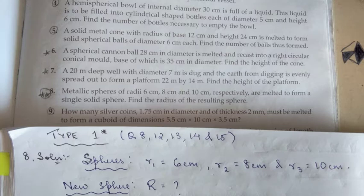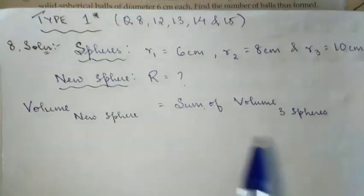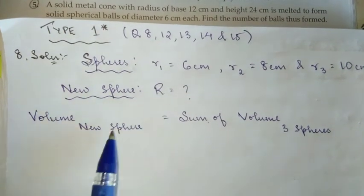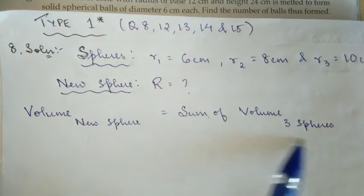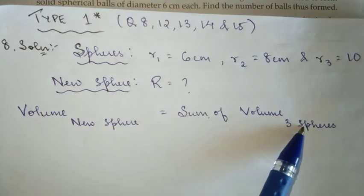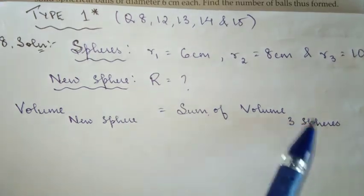So we have three spheres that are melted together to form a new sphere. Now you will write down what's given to you: spheres with radius one, radius two, radius three as 6, 8, and 10. The new sphere - we need to find its radius. The volume of new sphere is equal to the sum of volumes of three spheres.